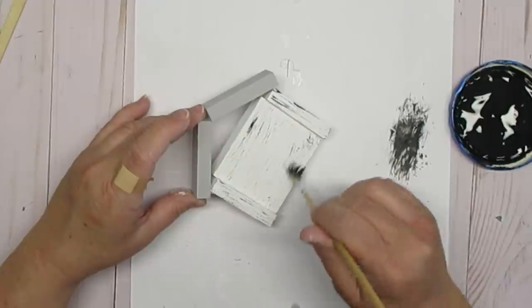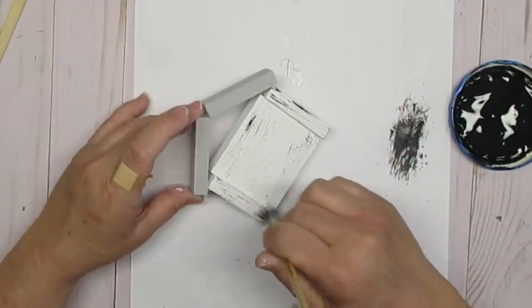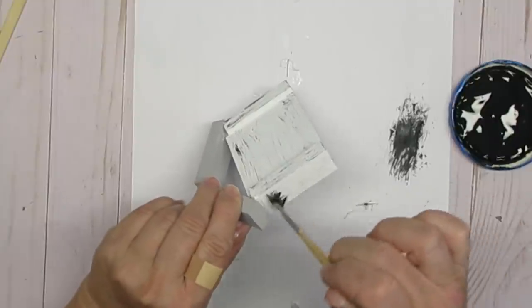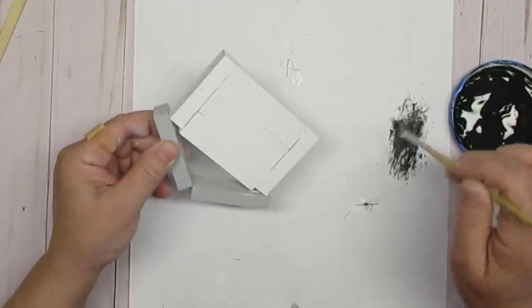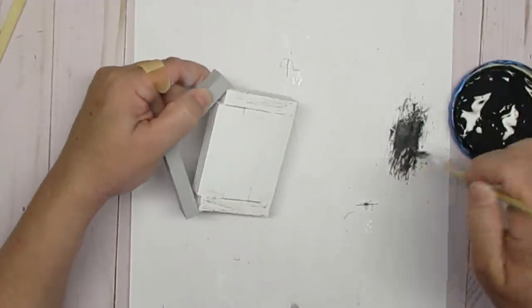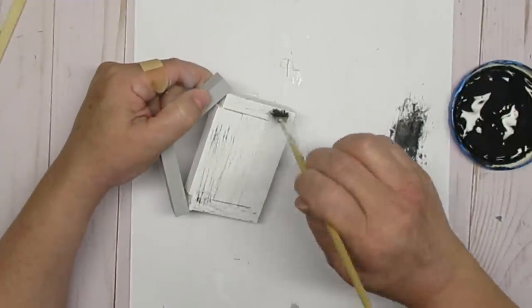It's got some paint crusted on it and it just gives some really great texture. So I'm just dipping the brush in the paint, dabbing some of it off on the paper and then just dragging it across the house in the direction of the wood grain.